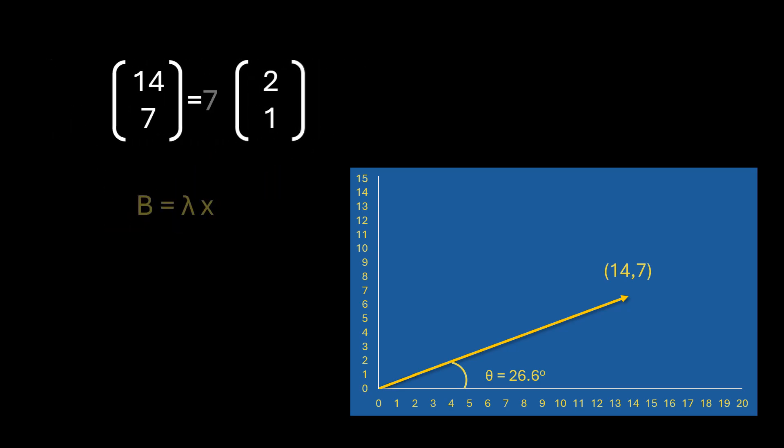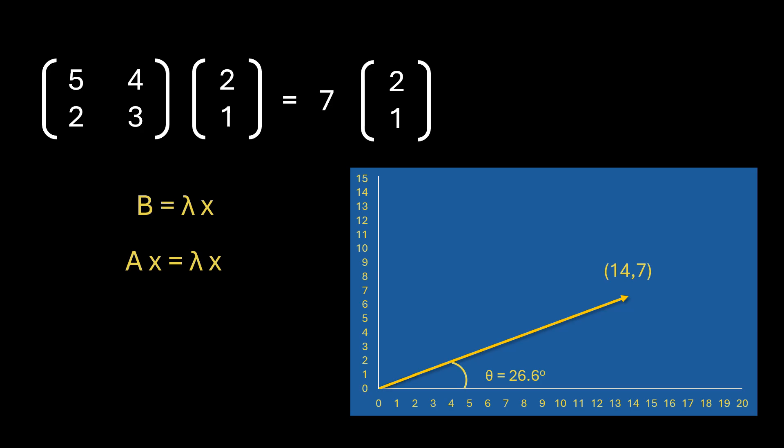And B can be written as lambda multiplied by x where lambda is the scaling factor or eigenvalue. And we already know that Ax = B and if B is lambda x then Ax must be equal to lambda x. And this equation Ax = lambda x is known as eigenvalue equation.